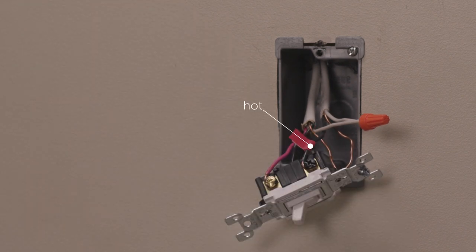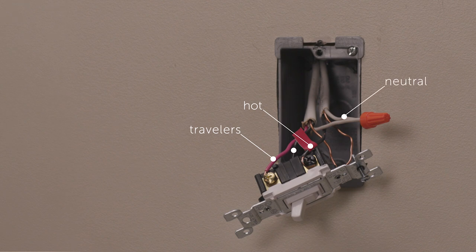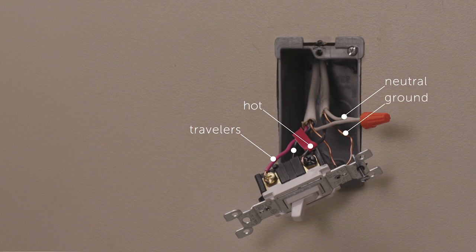The other two wires are traveler wires that go to the other three-way switch. The neutral wire creates a path to return current to the power source when the device is off. This wire is required for your switch installation. And the ground wire provides a safe path for electricity in the event of a short circuit.